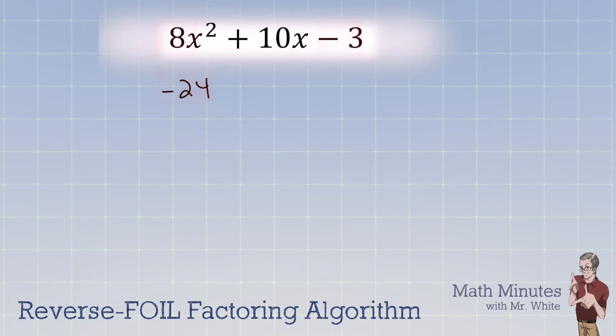Now what are the different ways to make 24? Well, we could take 1 times 24. We could take 2 times 12, 3 times 8, or 4 times 6. Those are the different ways. But we need to make negative 24. So one of the numbers needs to be negative. And we need to make a positive middle term, positive 10x.